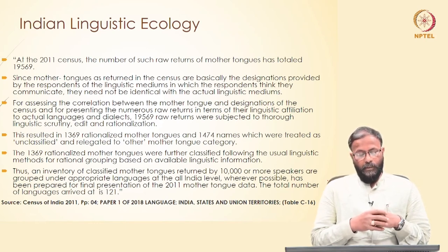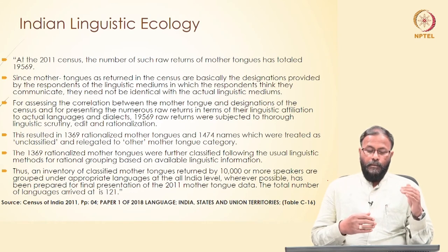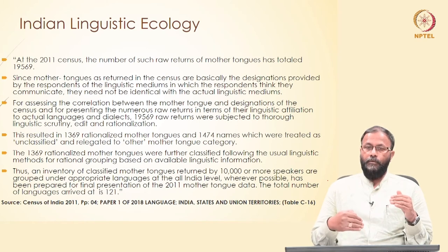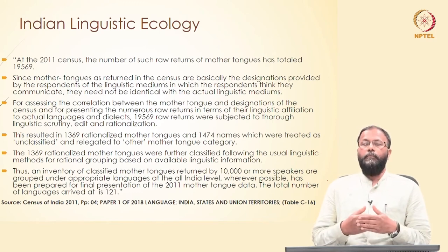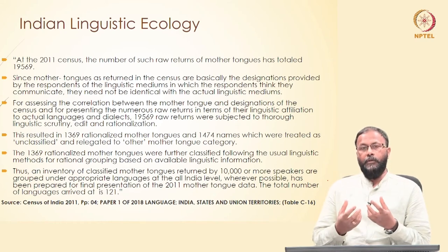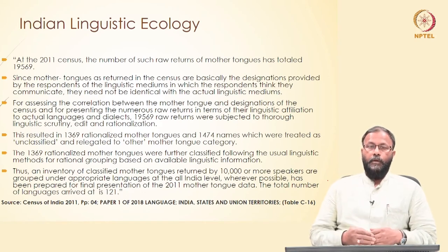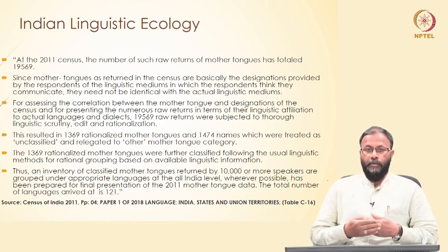The 1,369 rationalized mother tongues were further classified following usual linguistic methods for rational groupings. An inventory of classified mother tongues returned by 10,000 or more speakers was grouped under appropriate languages at all-India level, wherever possible. The total number of languages arrived at is 121. So we go from 19,569 raw returns to a final tally of 121 languages. Government of India in Census 2011 claims 121 languages spoken over all states and union territories.